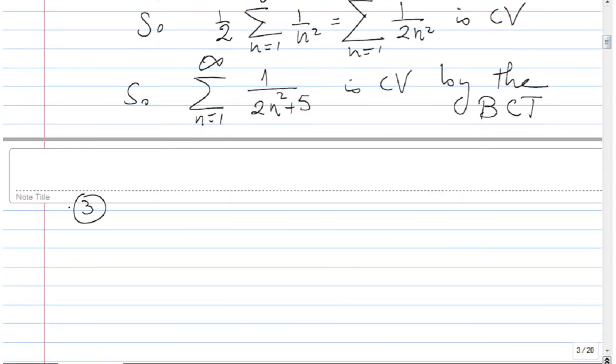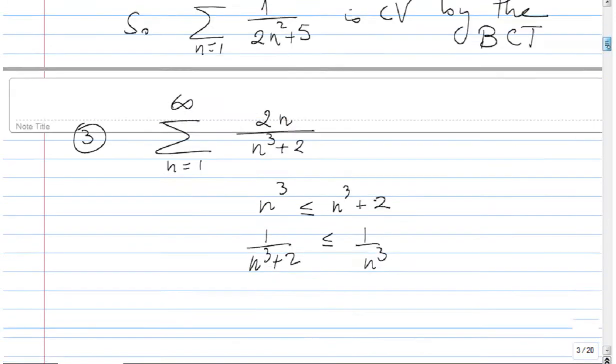Third problem is Sigma from n equal one to infinity two times n over n cubed plus two. So we have n cubed less than n cubed plus two, so one over n cubed plus two is less than one over n cubed. And finally if I multiply by two n, I get two n over n cubed plus two is less than two n over n cubed, which gives me two over n squared. I cancelled one n from top and bottom.